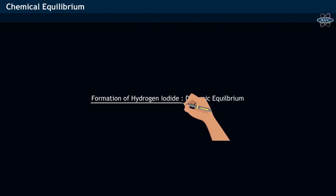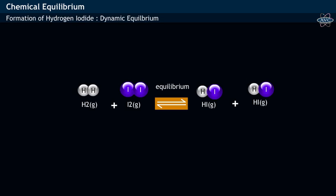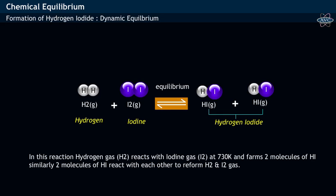Formation of Hydrogen Iodide and Dynamic Equilibrium. Let us consider the reversible reaction of formation of Hydrogen Iodide. In this reaction,